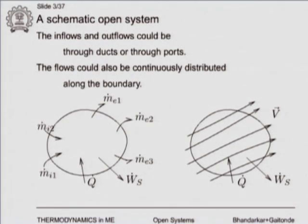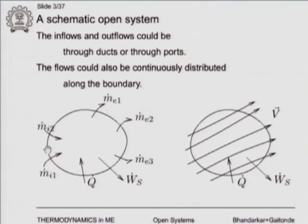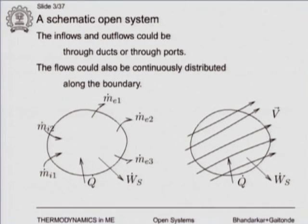In a typical fluid mechanics diagram, you have some arbitrary shape with mass coming in and out: m_dot_i1, m_dot_i2 are inlets and m_dot_e1, m_dot_e2 are outlets. There could be work and heat transfer across the whole boundary. This is what a typical control volume looks like.